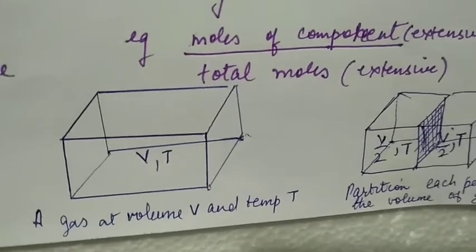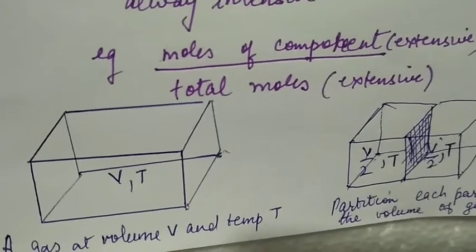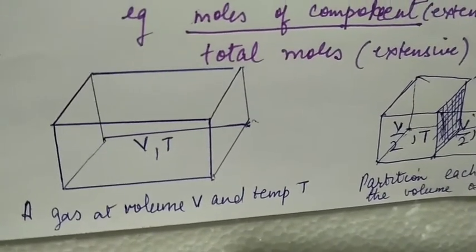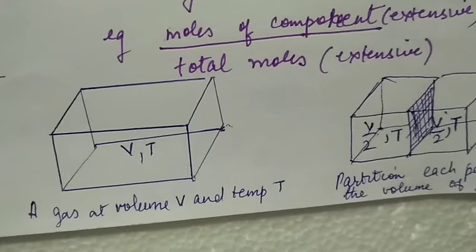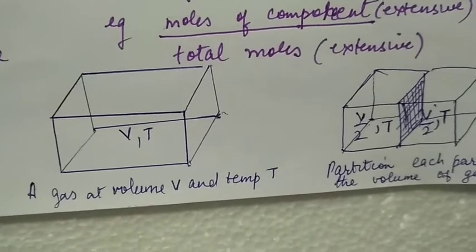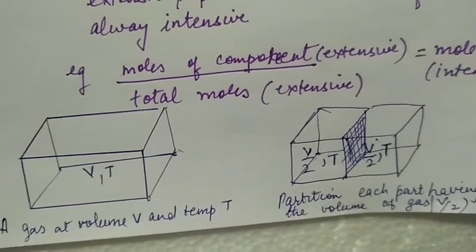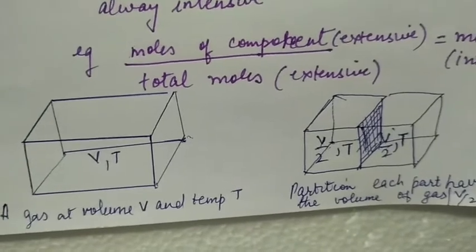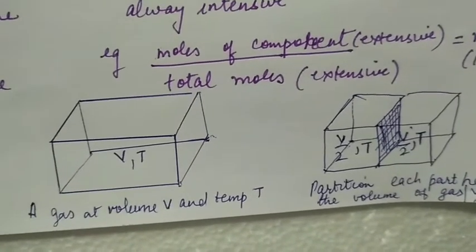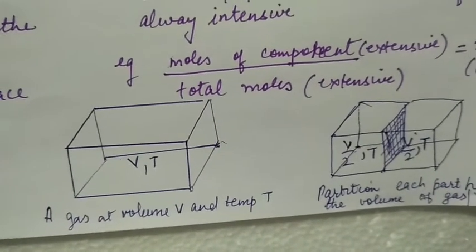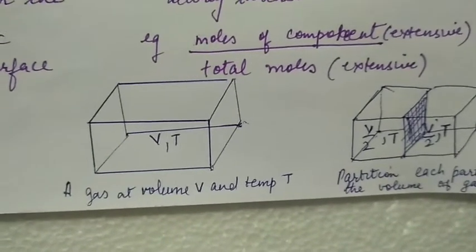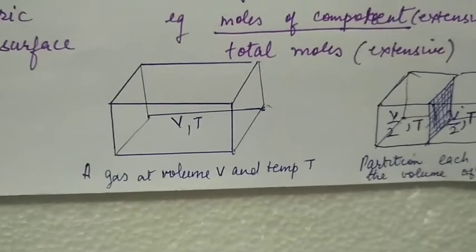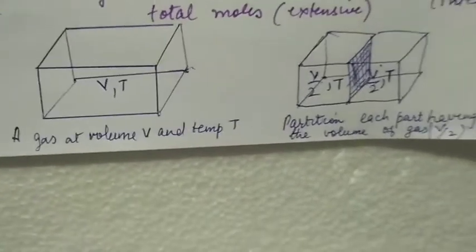Here is a vessel, its volume and temperature we can see, it is V and T respectively. If you place a partition in the middle of this vessel, the volume will become half, V by 2. But temperature will still remain the same. Similarly for the second part also, V by 2. So volume, which depends on amount of matter, will change, but temperature does not depend on amount of matter, it remains the same. So temperature is an intensive property, and volume is an extensive property.